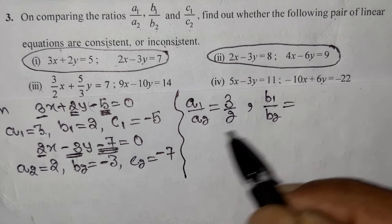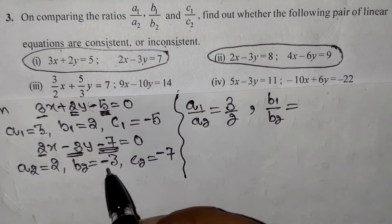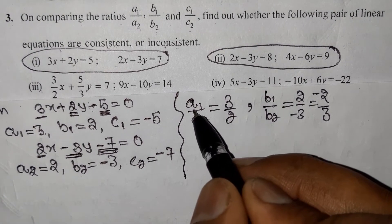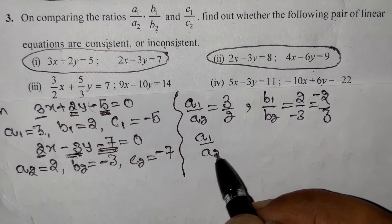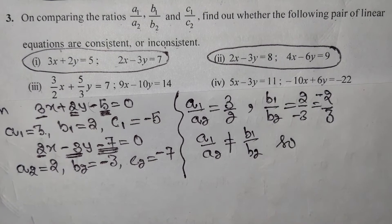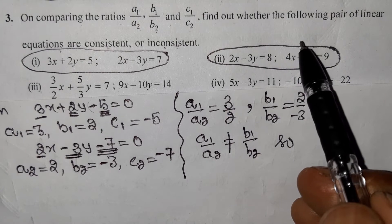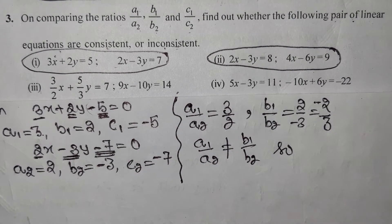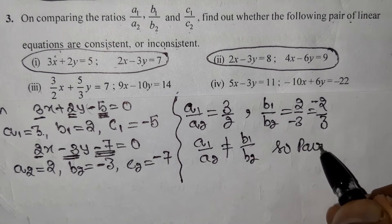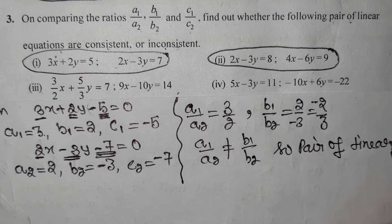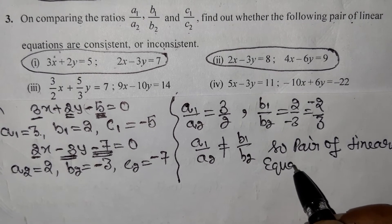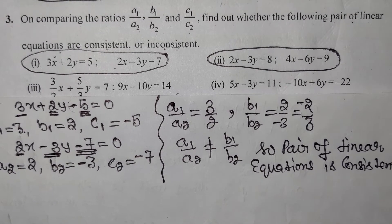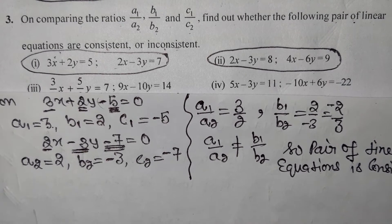B1/B2 = −2/3. We can see that A1/A2 is not equal to B1/B2 (3/2 ≠ −2/3), so the pair of linear equations is consistent — there will be a unique solution.